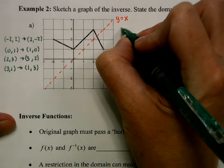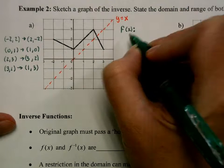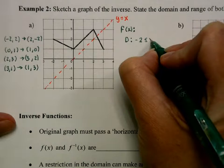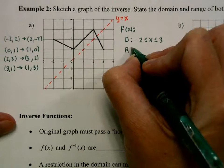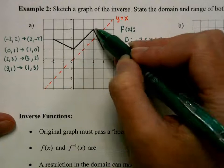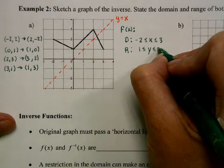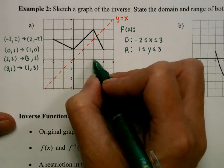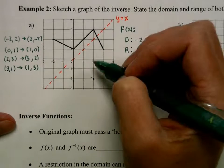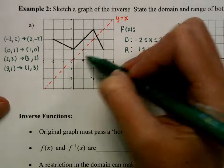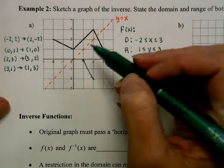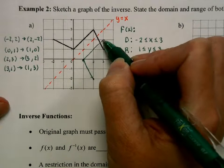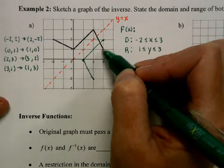Before I start, I'm going to do my domain and range for f. The domain goes from -2 to 3, and my range goes from 1 up to a high value of 3. So let's graph the inverse. This point goes to (2, -2). Notice it's right over that line, y equals x. (0, 1) goes to (1, 0). (2, 3) goes to (3, 2). And then my (3, 1) goes to (1, 3).